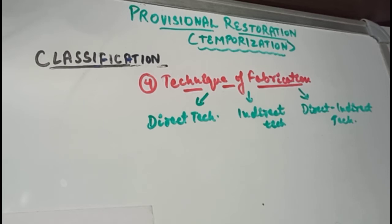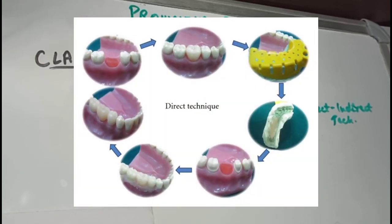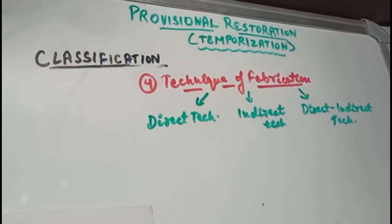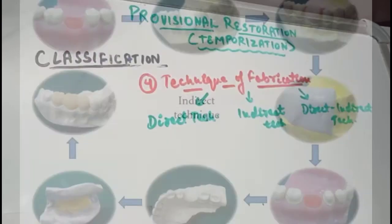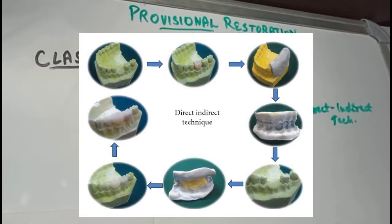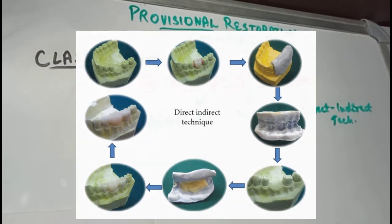The direct technique is done on the actual prepared teeth in the patient's mouth. The indirect technique is accomplished completely outside the mouth. In the direct-indirect technique, a temporary is formed indirectly and then relined directly in the patient's mouth.